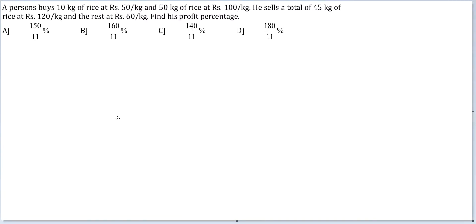Let's look at this question. A person buys 10 kg of rice at Rs.50 per kg and 50 kg of rice at Rs.100 per kg. He sells a total of 45 kg of rice at Rs.120 per kg and the rest at Rs.60 per kg. Find his profit percentage.